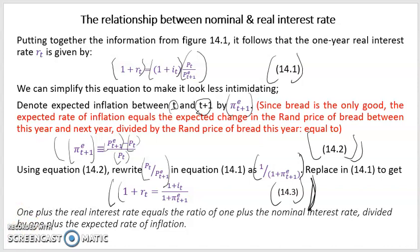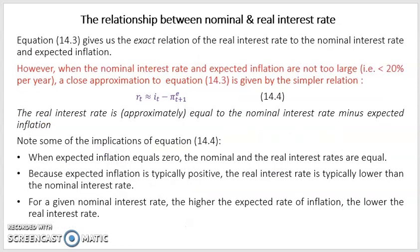Equation 14.3 says the one-year real interest rate equals the one-year nominal interest rate divided by one-year expected inflation — or rather, the real interest rate payable next year equals the ratio between the nominal interest rate payable next year and expected inflation next year.